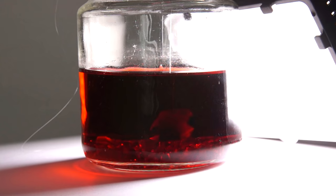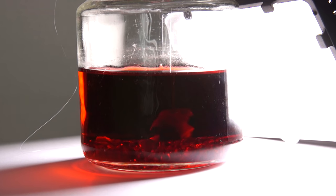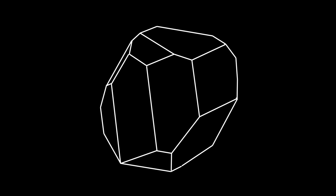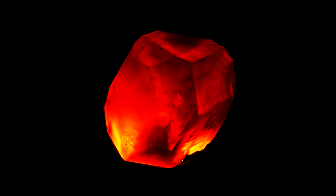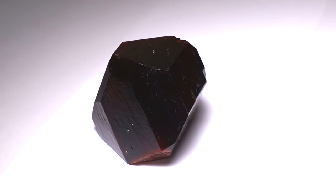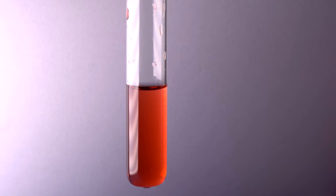A double-salt ammonium cobalt sulfate can be used to produce beautiful red crystals with symmetrical forms. However, there are other cobalt compounds which we are going to synthesize now.